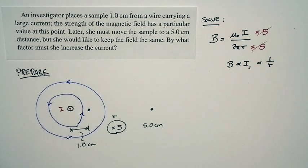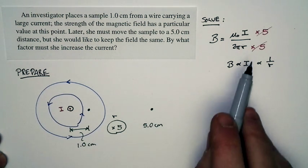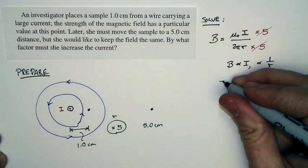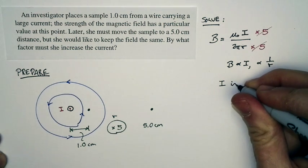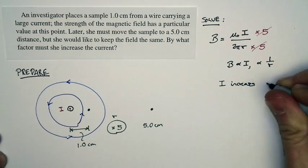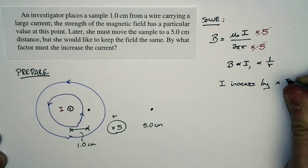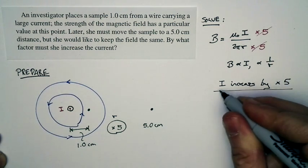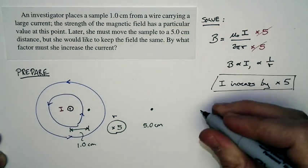So the result is, if she moves the sample five times as far away, she needs to increase the current by a factor of five. And that's our answer.